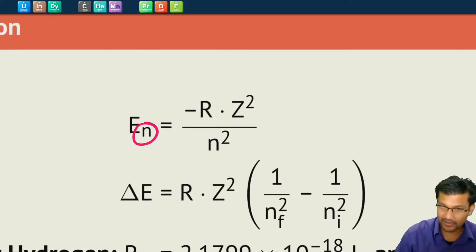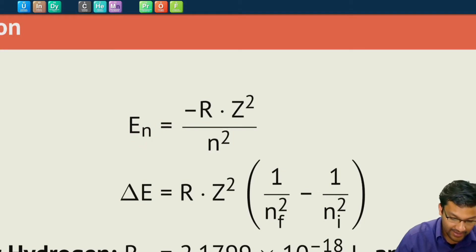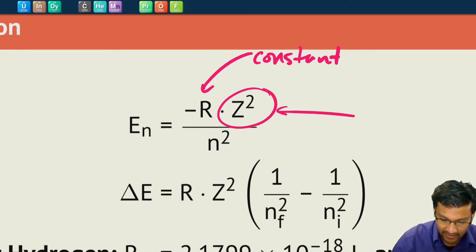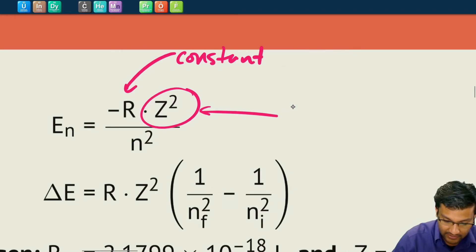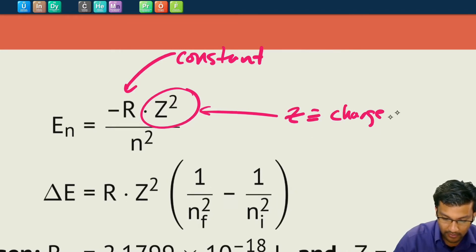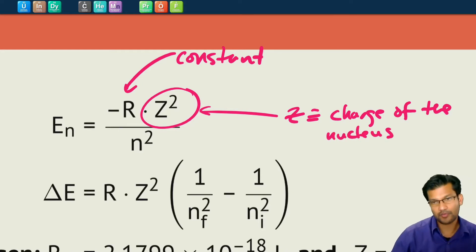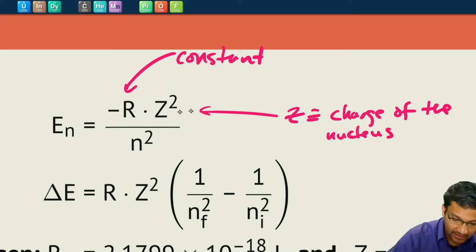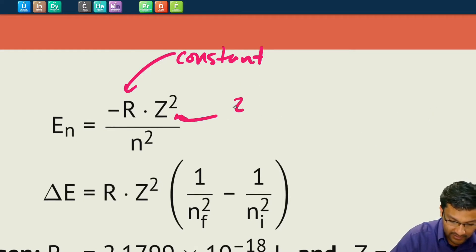So n is just labeling the orbits — 1, 2, 3, 4, 5, and so on, up to infinity. R here is just some constant, and we'll talk about that constant in just a second. Z squared — z is just the charge of the nucleus, meaning it's the number of protons. So if you're dealing with a hydrogen atom, z is 1; helium, z is 2, and so on. So z is nuclear charge.